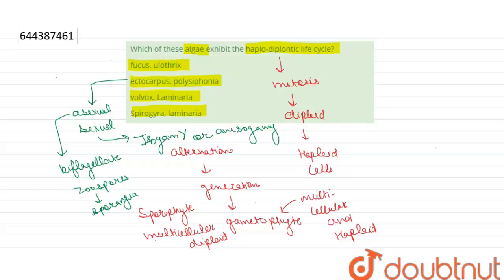Now if we talk about Polysiphonia, the life of Polysiphonia is triphasic and haplodiplontic. There are three different phases of life of Polysiphonia.